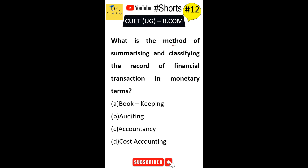What is the method of summarizing and classifying the records of financial transactions in monetary terms? First option is bookkeeping. Second option is auditing. Third option is accountancy. Fourth option is cost accounting. The correct answer is Option C — accountancy is the method of summarizing and classifying the record of financial transactions in monetary terms.